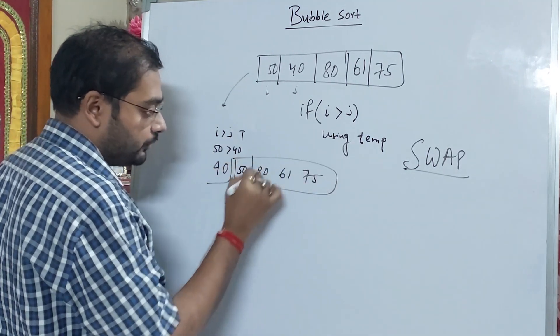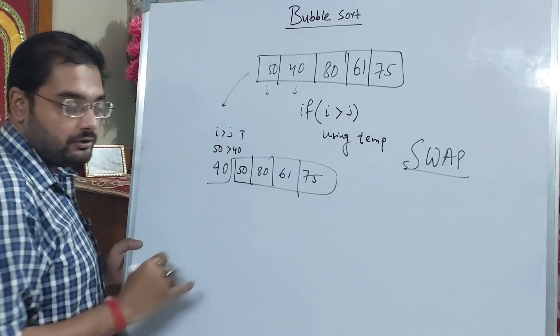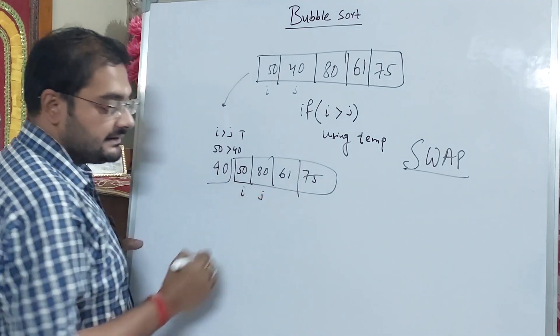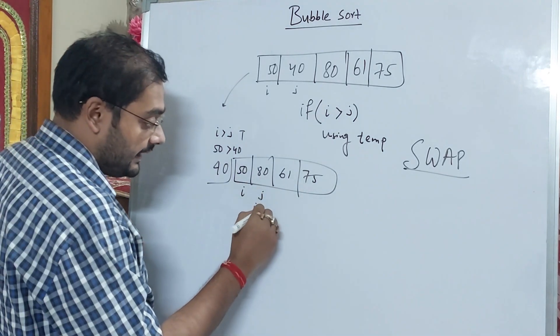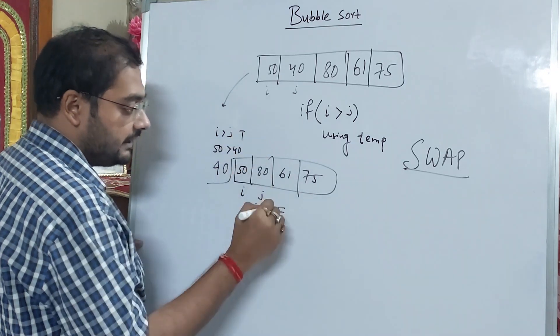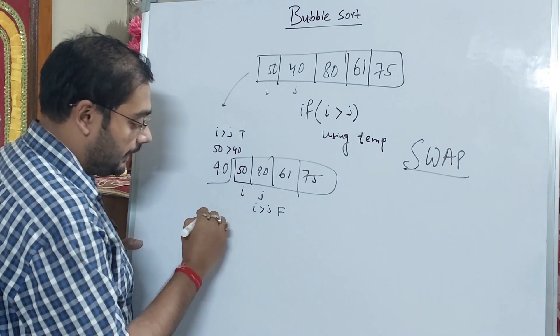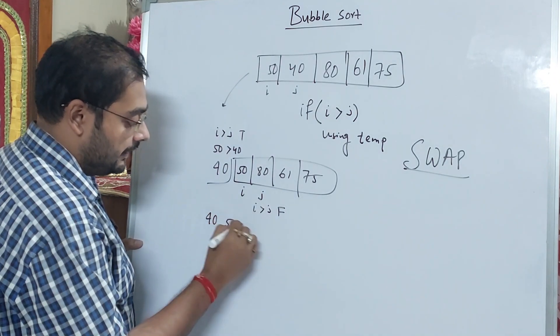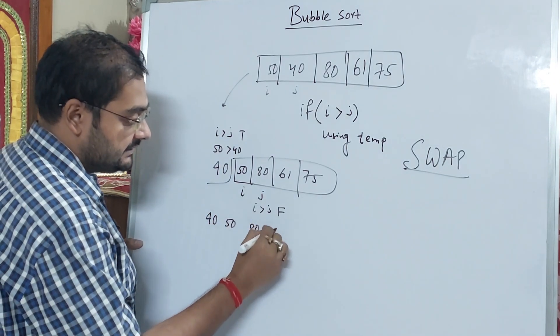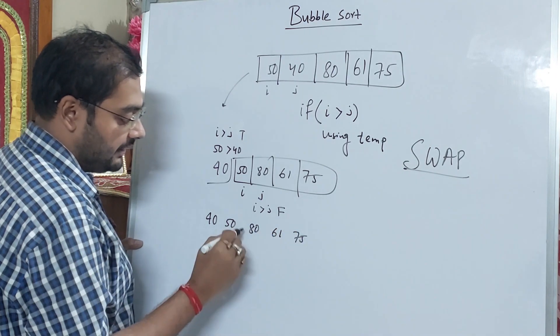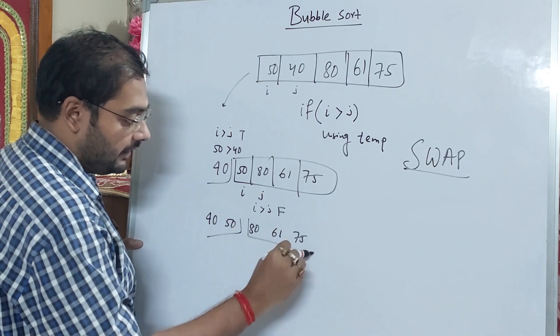Right, at the second point. In this case, the first one: I is greater than J. We can see that it is false. This is false. So we don't do swapping. So we still have 40, 50, 80, 61, 75.